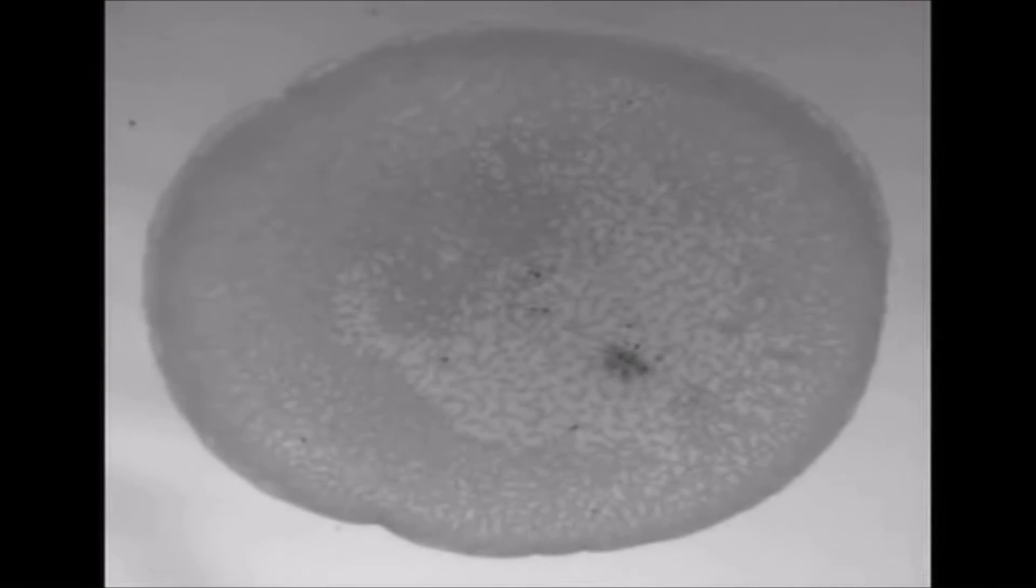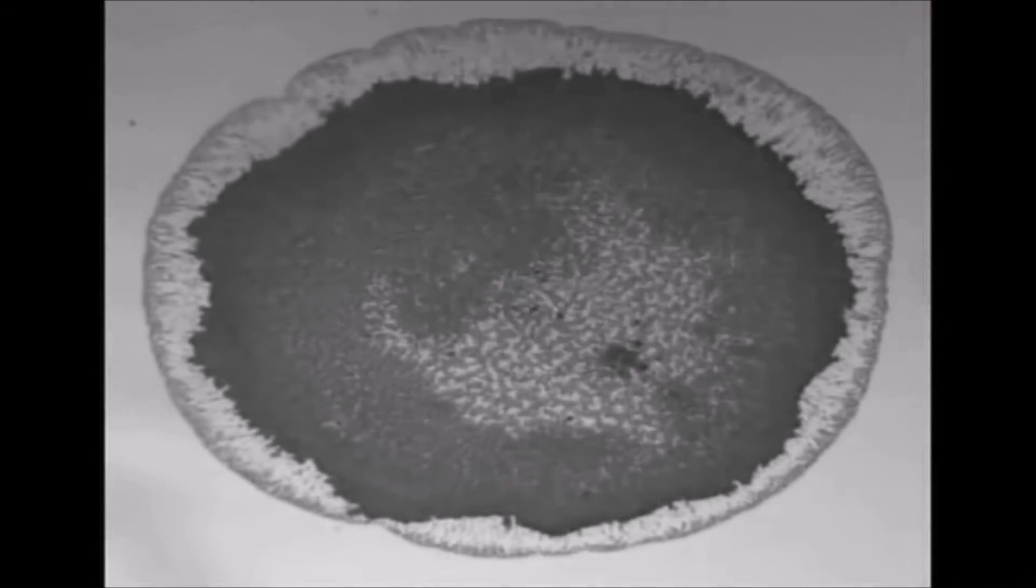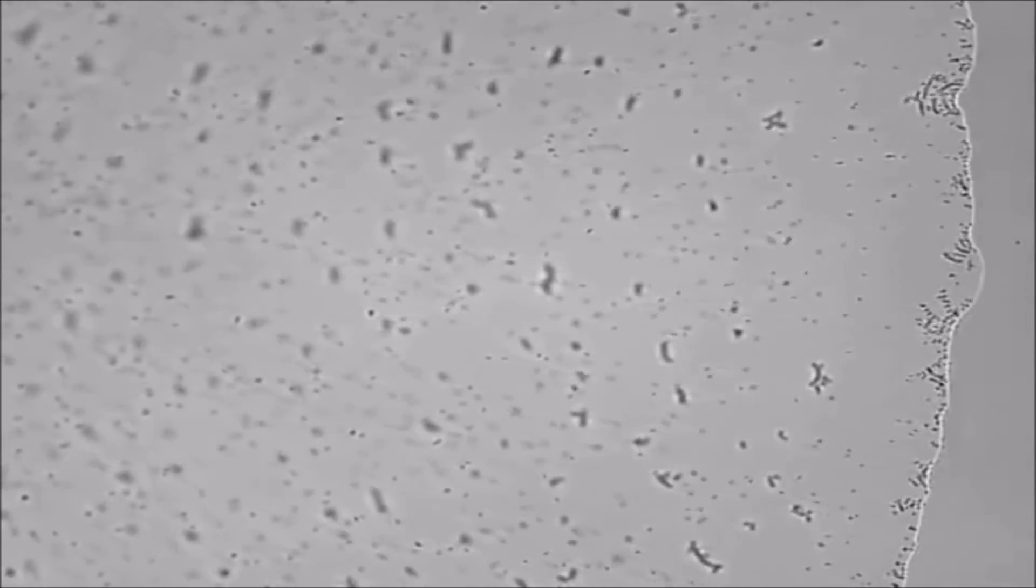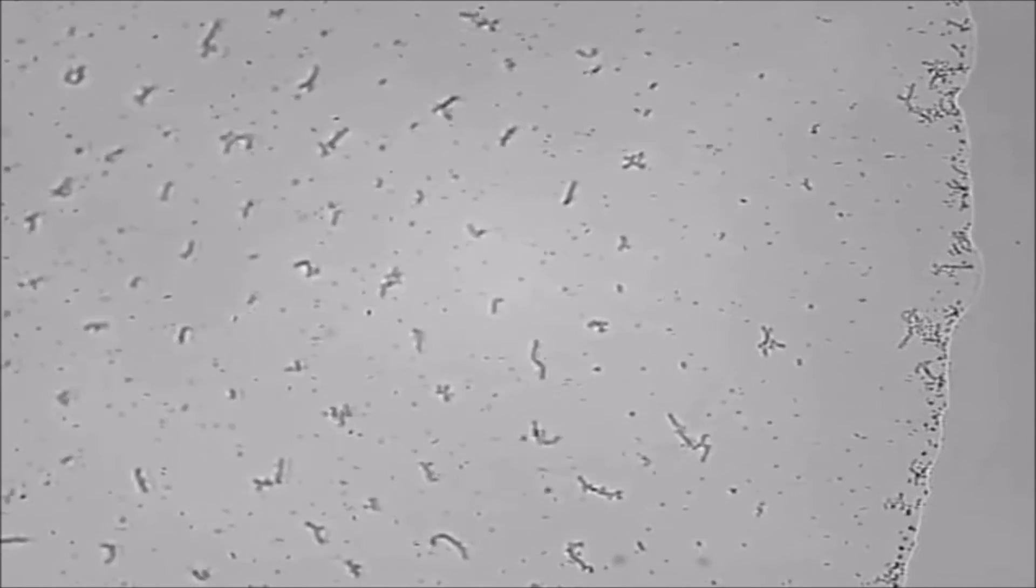In the same set of microscope footage we saw earlier, we can see that the more elongated particles clump together more easily and disrupt the flow.